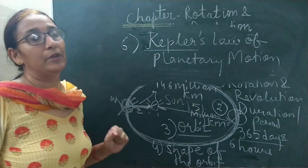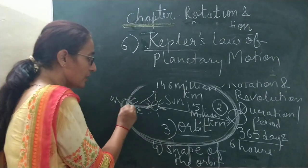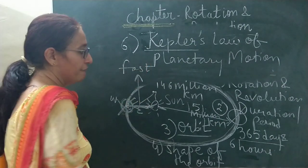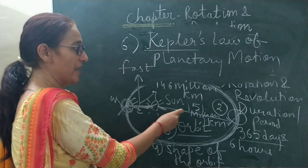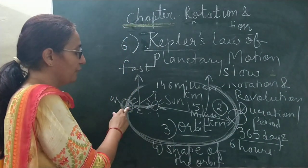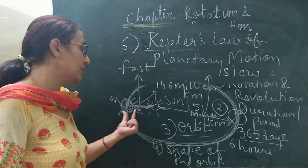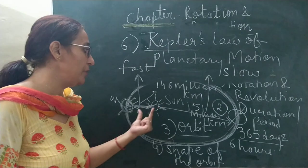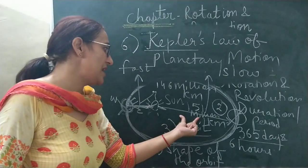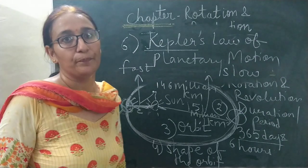Johannes Kepler was a famous German mathematician and astronomer who explained that at the time of perihelion, the speed of earth will be fast, and when the earth is far away from the sun at the time of aphelion, the speed of earth will be slow. The reason is gravitational force: when earth comes closer to the sun, the gravitational attraction will be more, so the speed of earth will be faster. When earth goes far away from the sun, the gravitational attraction will be less, so the speed will be less. In the next video I am going to explain the effects of revolution. Thank you students, have a nice day.